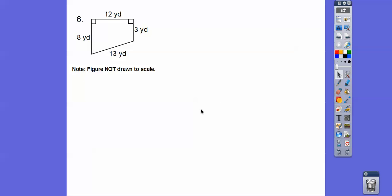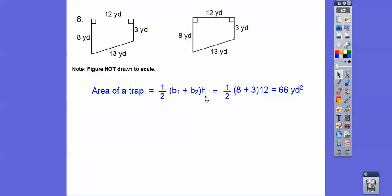Alright, this one here, it's not drawn to scale. When it's not drawn to scale, it's not. We don't need to worry about that right here because this is just a trapezoid. The area of a trapezoid is we add the parallel sides times the altitude, which is this 12, and then take half of that. So one half base 1 plus base 2 times h, which is the altitude. And I get 66 yards squared.